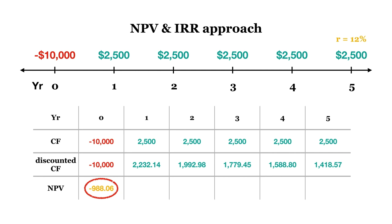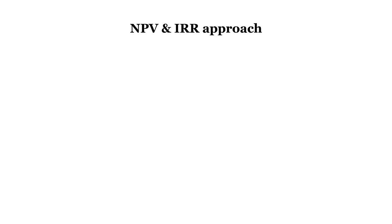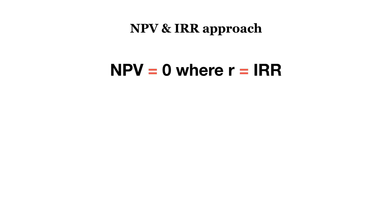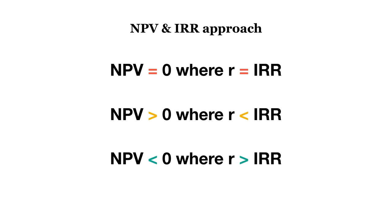Relating back to the decision rule, we know, given a negative NPV, that the discount rate of the project must be higher than the project's internal rate of return. Thus, we can relate both the NPV and IRR approach to make a decision. NPV equals 0 is where R equals IRR. NPV is greater than 0 where R is less than IRR, and NPV is less than 0 where R is greater than IRR.